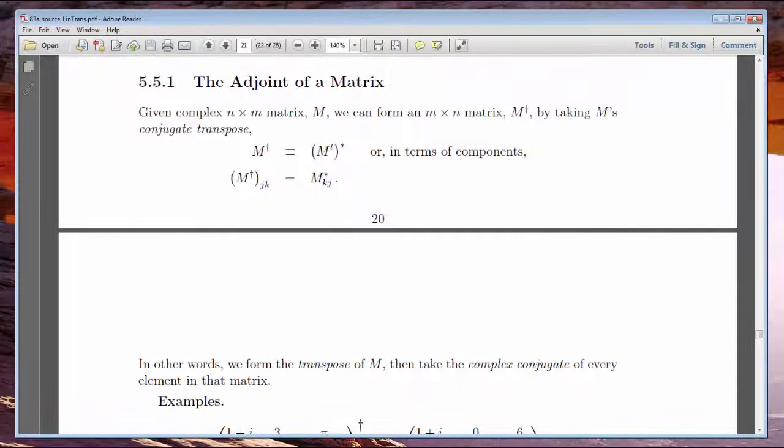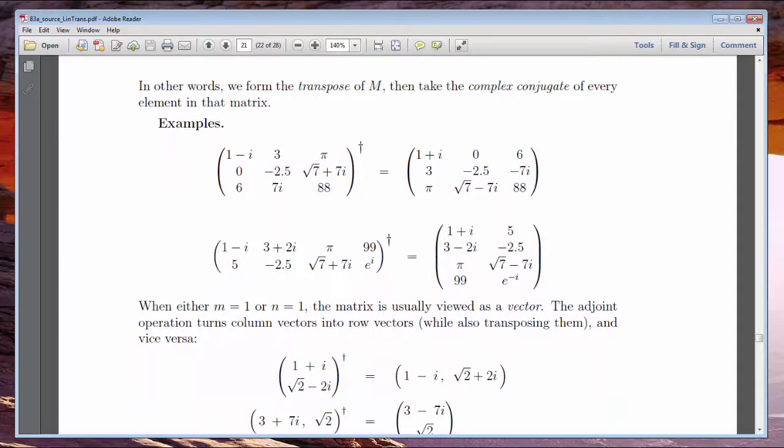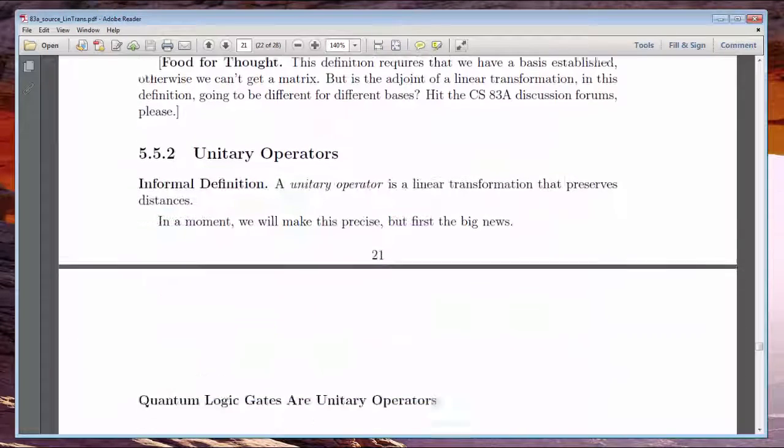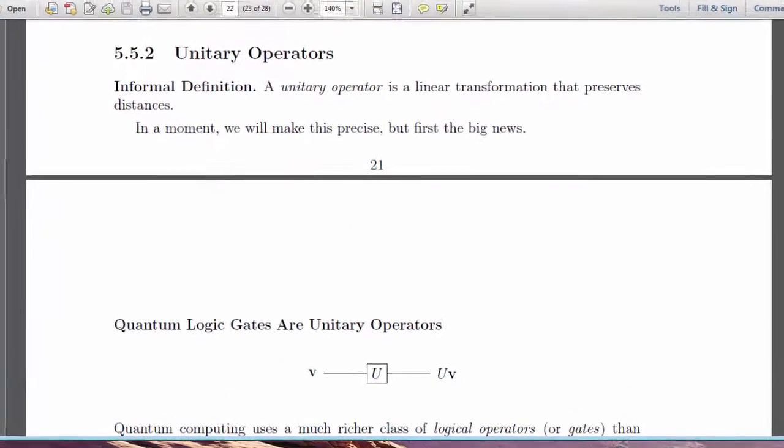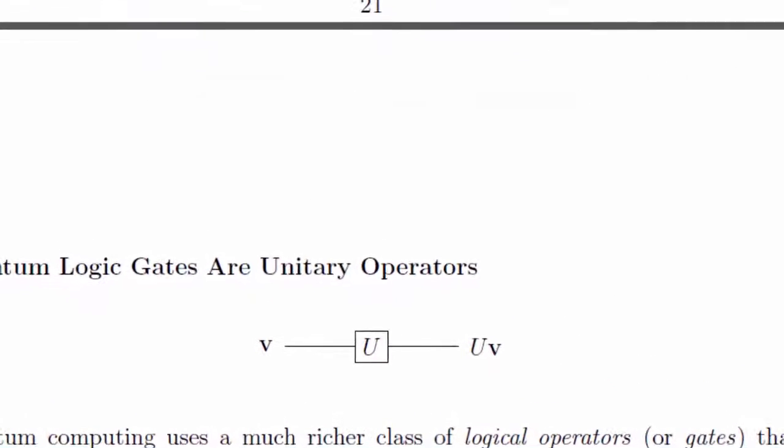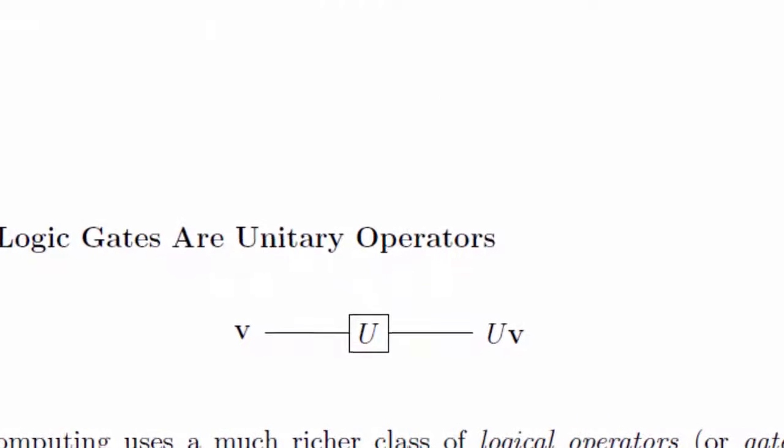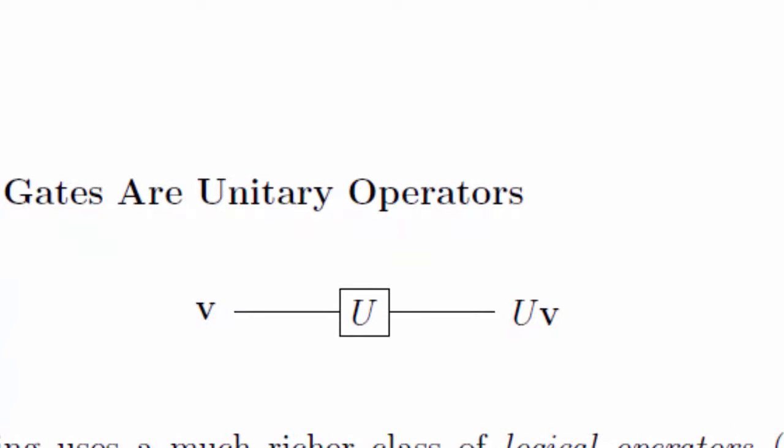As always, I'll give you some impressive sounding vocabulary, like the adjoint of a matrix, or unitary operator. Unitary operators are our endgame today. While I may have said that quantum gates are really linear operators, I failed to mention that they're not just any linear operators. They have to satisfy a very restrictive property called unitarity.